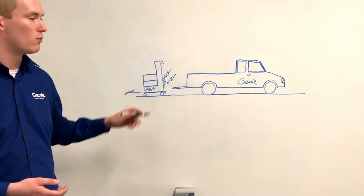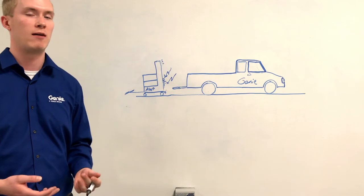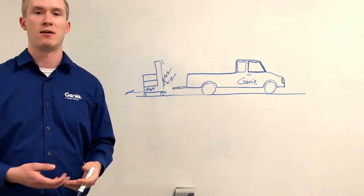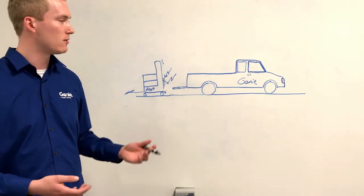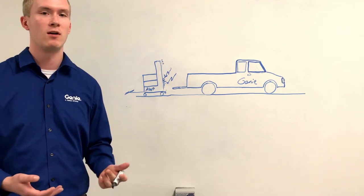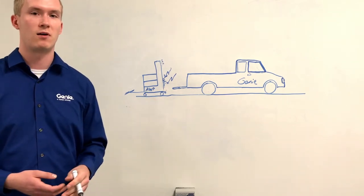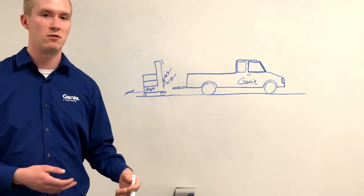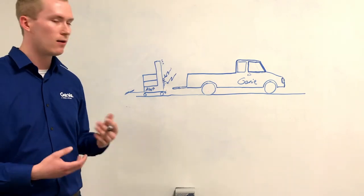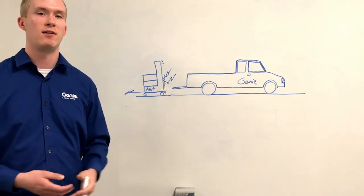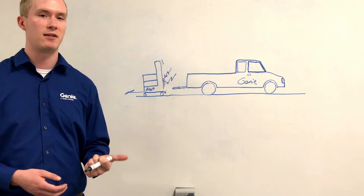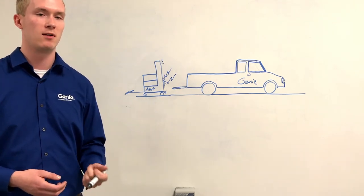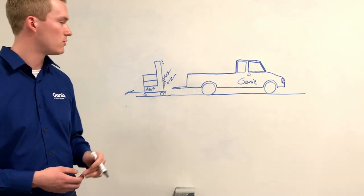Important things to remember is Genie Aerial Work Platforms are pretty lightweight machines when compared to a slab scissor. Slab scissor is usually 2,500 pounds or more, whereas Genie Aerial Work Platforms are anywhere from 600 to 900 pounds. So they're lightweight, but they're still not light. We need to make sure that we're using proper lifting technique and using the appropriate number of people to lift the machine into the pickup truck.